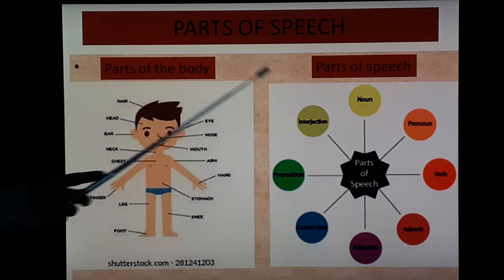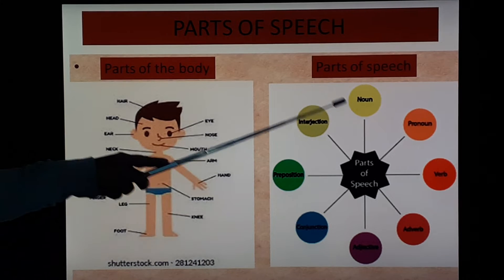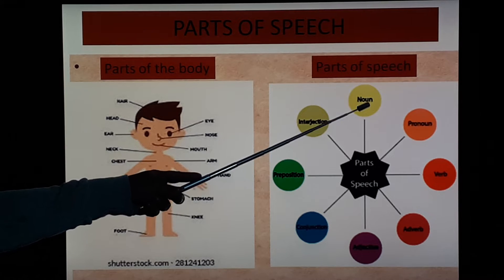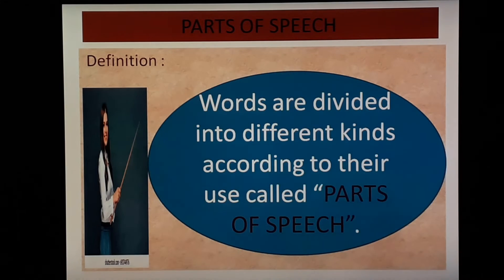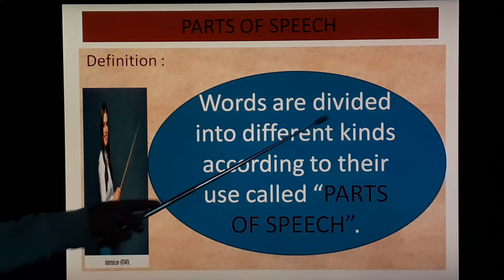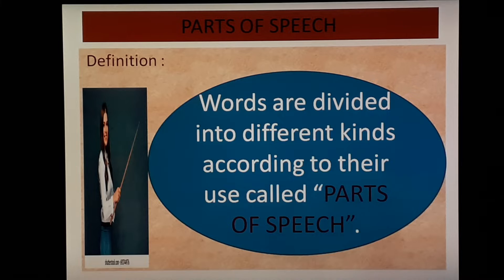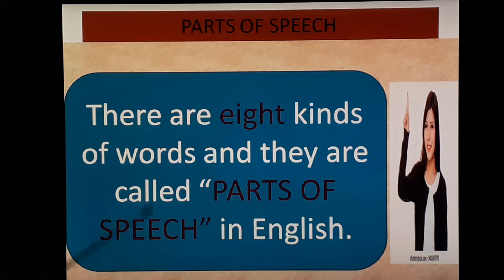Today we are going to see parts of speech Part 2, in which you will see there are a total of 8 parts of speech. We have already completed noun and its types in Part 1, and today we are going to start pronoun and its types. Words are divided into different kinds according to their use — these are called parts of speech. There are 8 kinds of words called parts of speech in English.